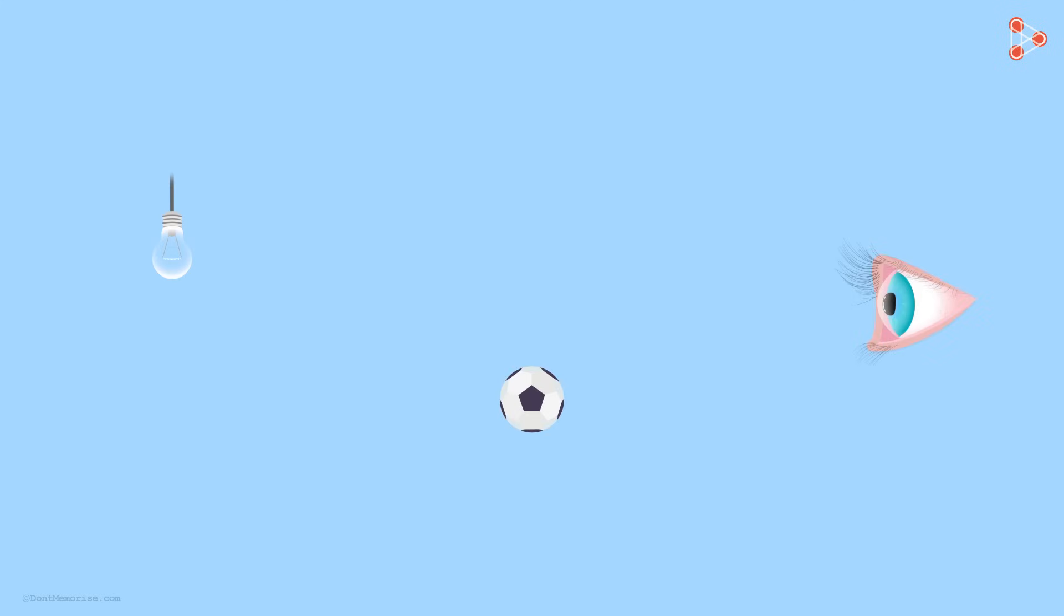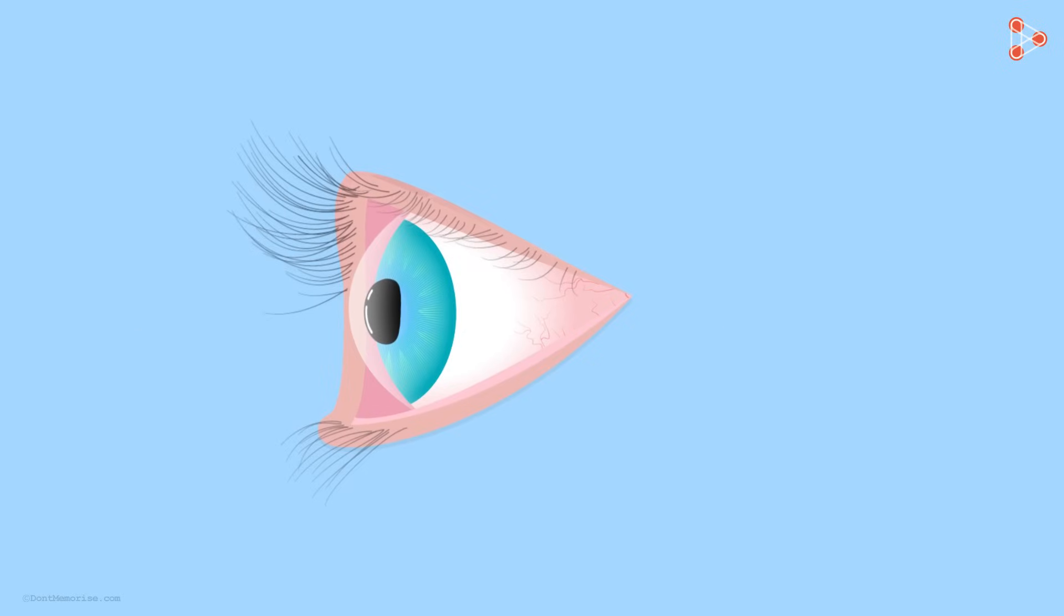We learned that objects are visible because of the light getting reflected from their surfaces. This reflected light enters our eyes and we see that object. What happens inside the human eye when the light rays enter it? What is it that helps us see the things around us?